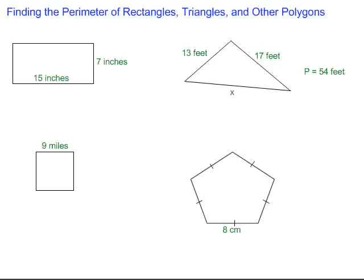Finding the perimeter of rectangles, triangles, and other polygons. Perimeter simply means the distance around something, the distance around the outside. Fences, for example, are put on the perimeter of a property.